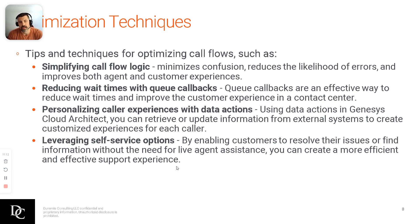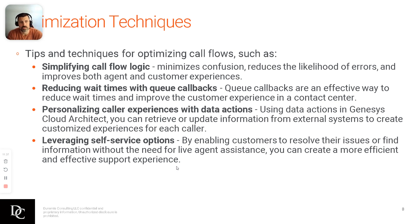Reducing wait times with queue callbacks — we mentioned that just a moment ago. Callbacks is a great way to reduce those times. It doesn't leave them on hold; the call kind of stays in queue for them, and once it gets answered by an agent, it calls that person back. Personalizing call experiences with data actions — that's with external systems like CRMs. Using Salesforce as an example, you're able to reach out to Salesforce, grab all the customer data in that record, and populate it — like 'welcome back, John Smith' — just using their name in that call flow provides a better personalized experience.